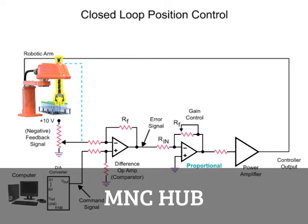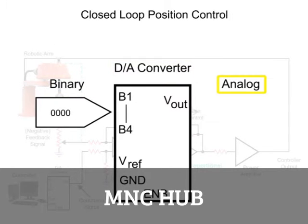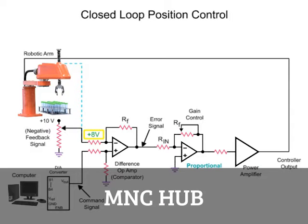To move the robotic arm to a specific position, a command signal from the computer starts the motion sequence. The analog command signal voltage produced by the digital-to-analog converter determines the position of the arm. The potentiometer attached to the robotic arm indicates the actual position, and the variable voltage produced is referred to as the feedback signal. When the feedback signal voltage matches the command signal voltage, the arm has reached the desired position.